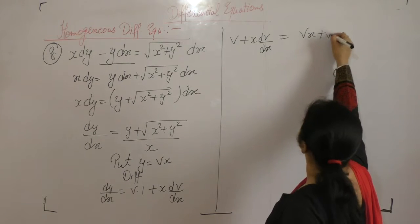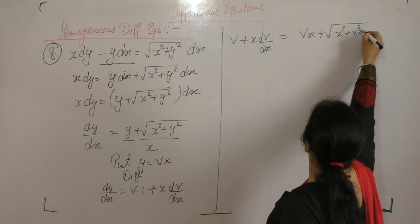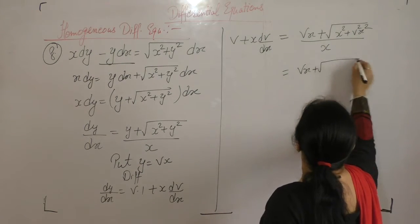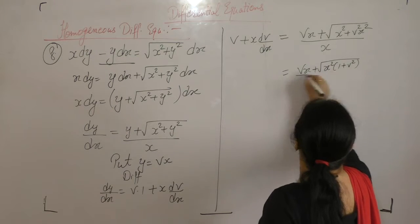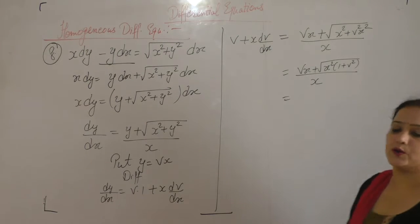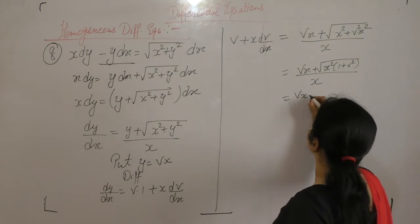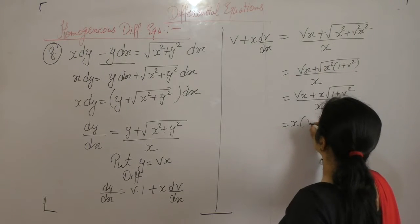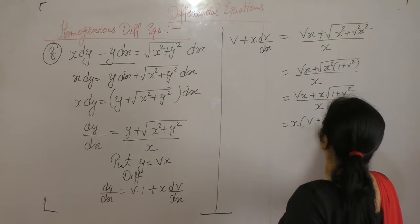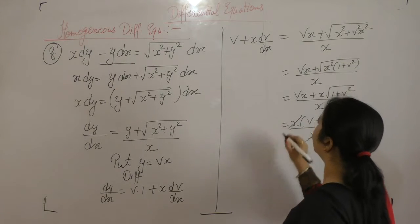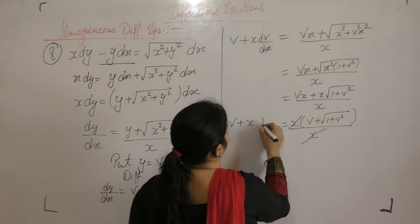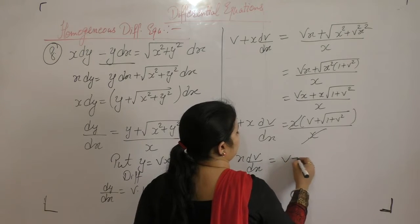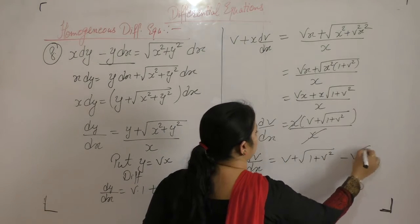Substituting: v plus x dv upon dx equals vx plus square root of x squared plus v squared x squared, all upon x. Taking x squared common inside the square root gives x times square root of 1 plus v squared. So x dv upon dx equals v plus square root of 1 plus v squared minus v.